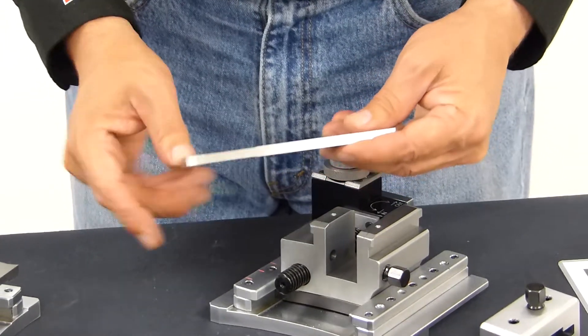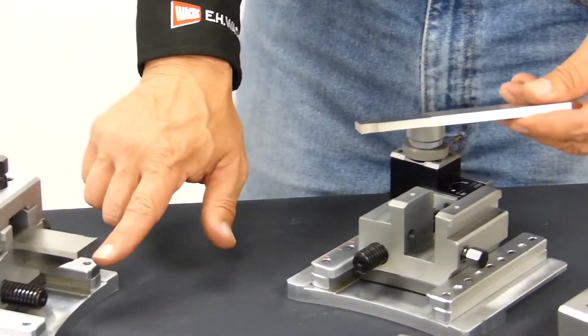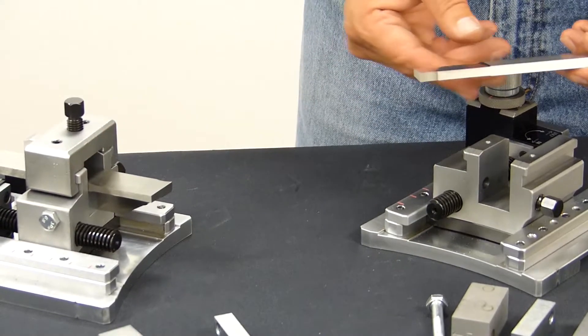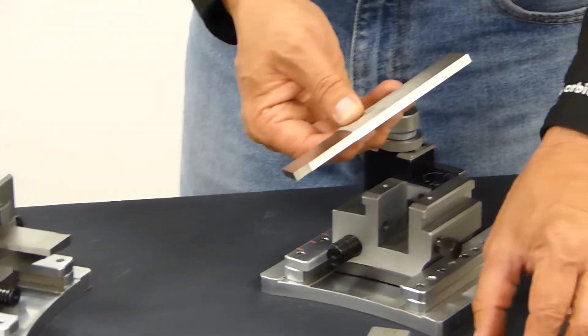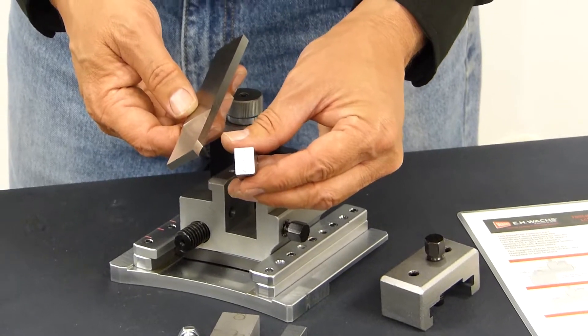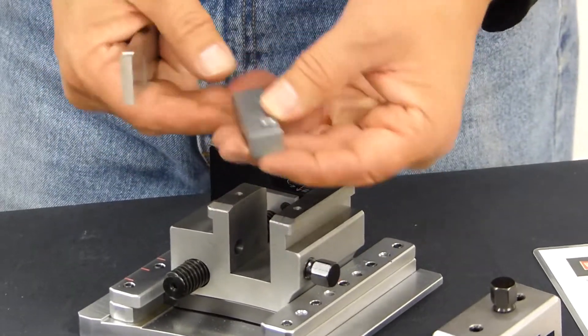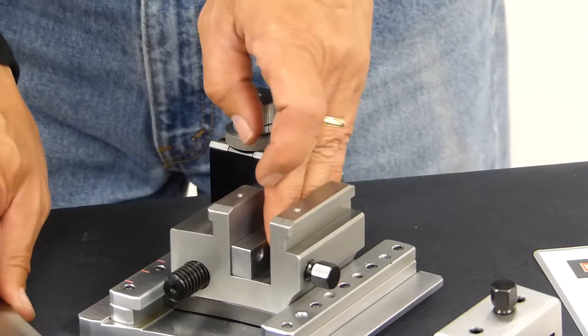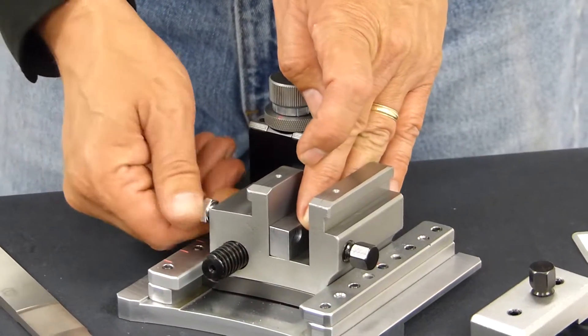On the second slide, we'll be putting in our second parting blade. Now the height of our legacy tooling is three quarters of an inch. So we're going to want to set this blade slightly lower. So that would be our 670 spacer. We'll take that block and place it into the slide. Secure it with the locking screw.